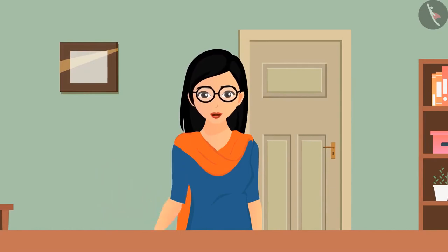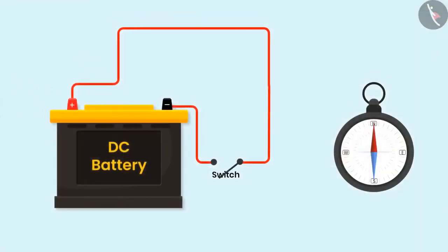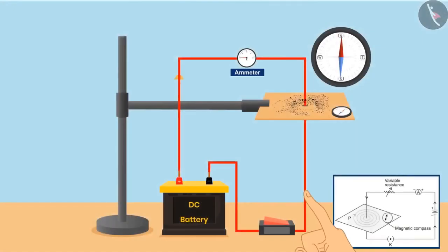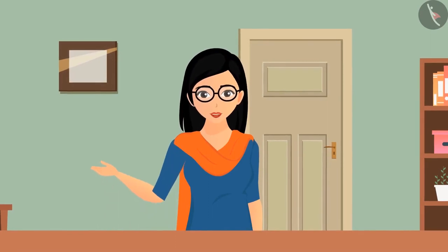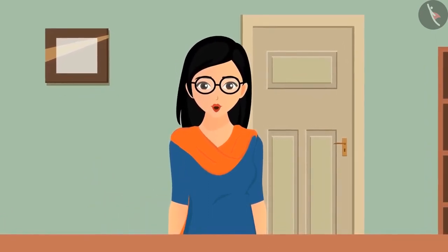Let's summarize what we have learned today. A current-carrying conductor acts like a magnet. If the electric current is increased, the strength of magnetic field lines also increases. The strength of magnetic field lines is directly proportional to the thickness of the current-carrying conductor. We will learn about appliances working on electricity and magnetism in our upcoming videos.